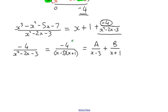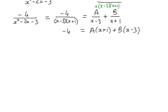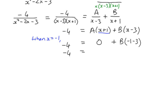We move to stage 2 of partial fractions: multiply through by the denominator. On the left-hand side we just have the numerator, negative 4. On the right-hand side, the x minus 3 factors cancel leaving A times x plus 1, and the x plus 1 factors cancel leaving plus B times x minus 3. Selecting x equals negative 1: the A term disappears, and we get negative 4 equals B times negative 1 minus 3, so negative 4 equals negative 4B, giving B equals 1.